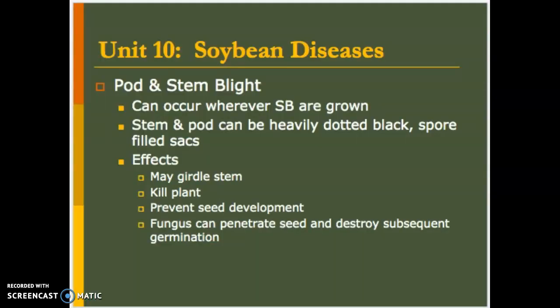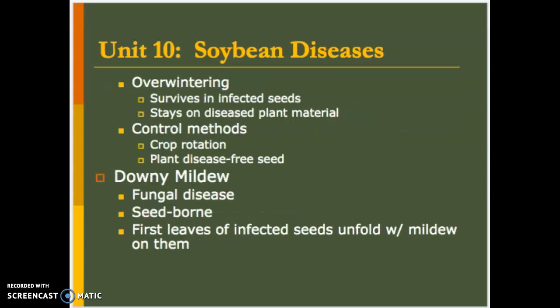Pod and stem blight occurs basically wherever soybeans are grown. You can see heavily dotted, spore-filled sacks on the pod. Most problematic is if it girdles the stem and kills the plant off, preventing seed and seedling development. The fungus can penetrate the seed and destroy subsequent germination. Again it overwinters and survives on infected seed, but you can rotate crops to pretty well take care of this, and good quality disease-free seed cuts back on this one as well.